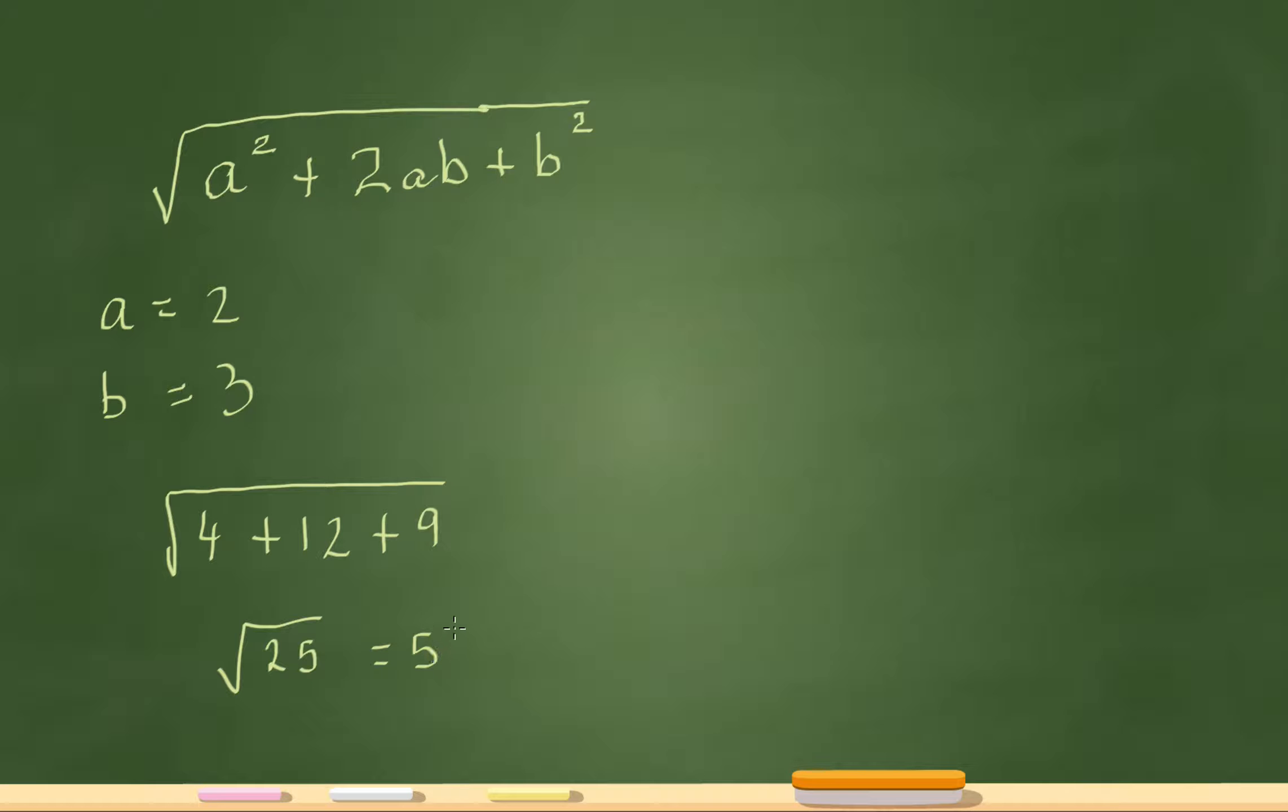Which I know is 5. So when I made my a to be 2 and I made my b to be 3, my answer comes out to 5. Now all I'm going to do is go through all my answer choices, plug my 2 and 3 back in, and see where I get 5.